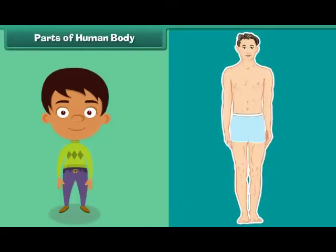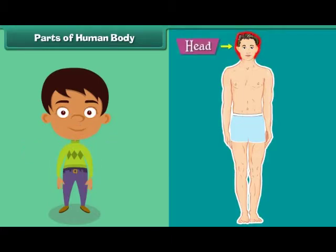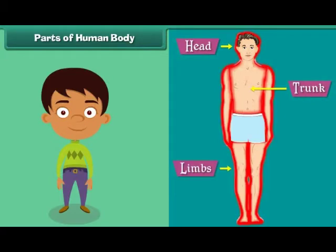Parts of human body. The human body is divided into three main parts. They are head, trunk, and limbs.